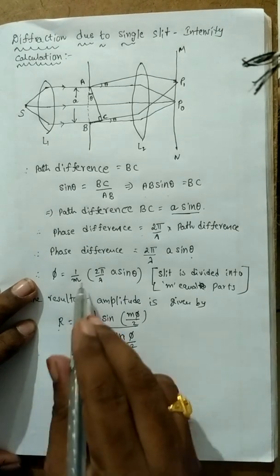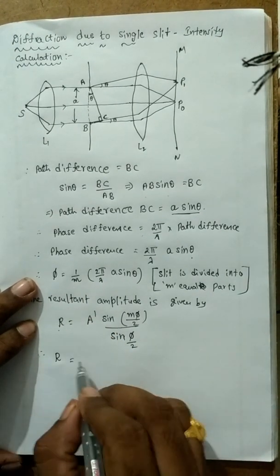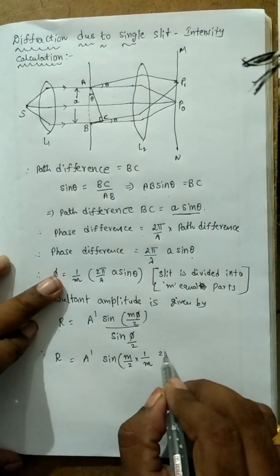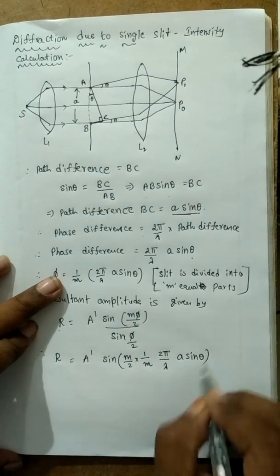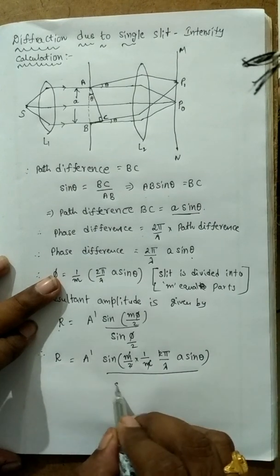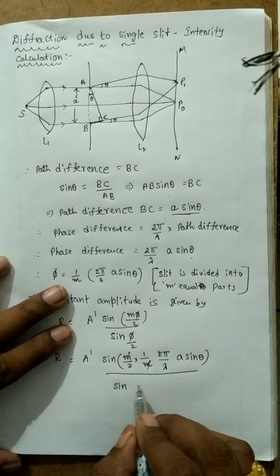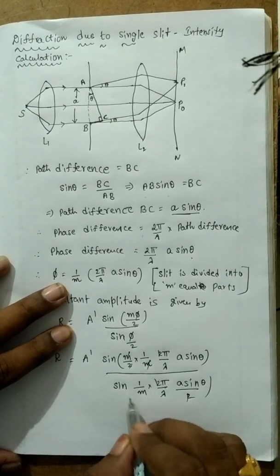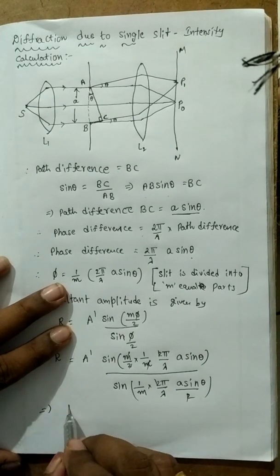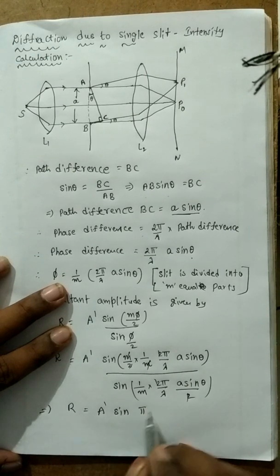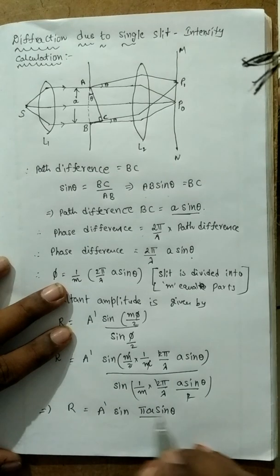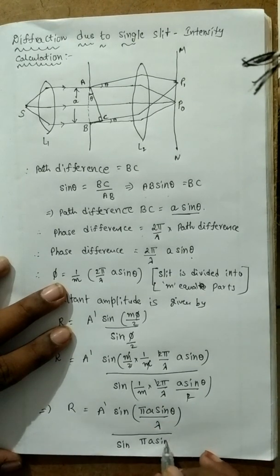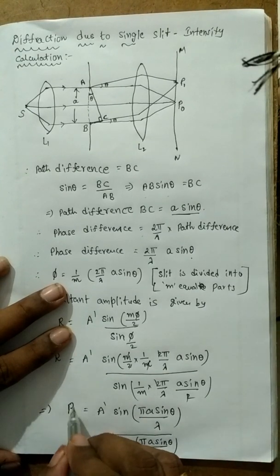Substituting δ = (1/M)(2π/λ)(A sin θ), we get M and 2 canceling, so R = A' × sin(πA sin θ / λ) / sin(πA sin θ / Mλ). This is the resultant amplitude.